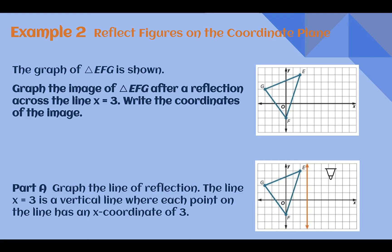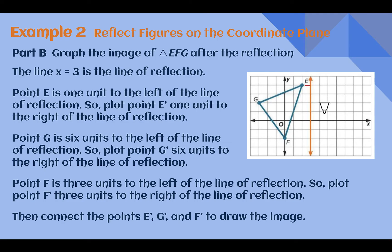Example 2: Reflect figures on the coordinate plane. The graph of triangle EFG is shown. Graph the image of triangle EFG after a reflection across the line x equals 3, and write the coordinates of the image. The process is the same as reflecting over an axis — we just have to graph our line of reflection in a more precise location. So x equals 3 is our vertical line through x = 3. We're going to reflect over that line. Point E is 1 unit to the left, so E prime must be 1 unit to the right. G is 6 units to the left, so G prime is 6 units to the right. F was 3 units away, so F prime is 3 units to the right. We can plot those points and our image would look like this.